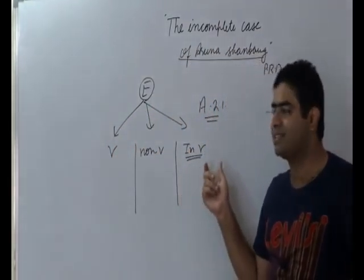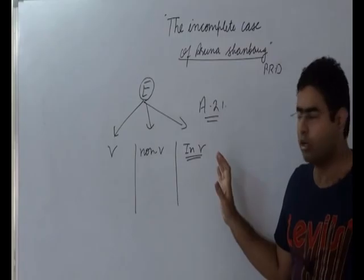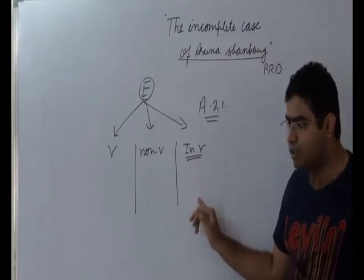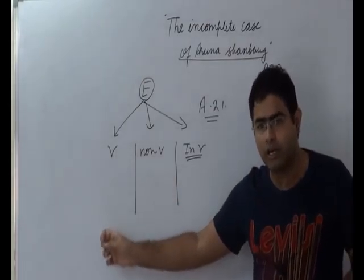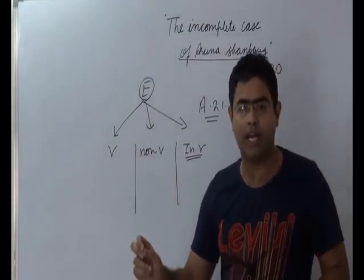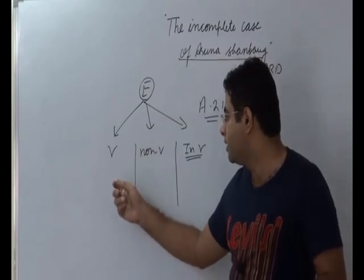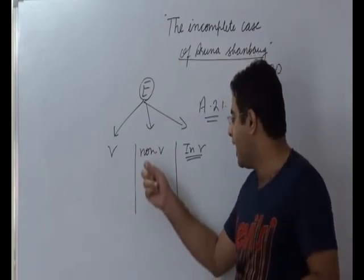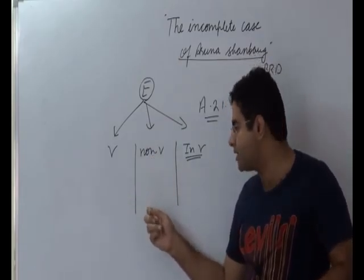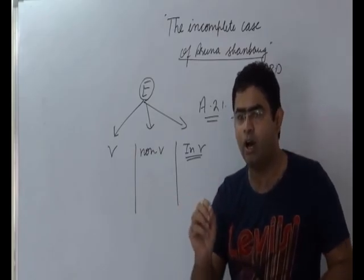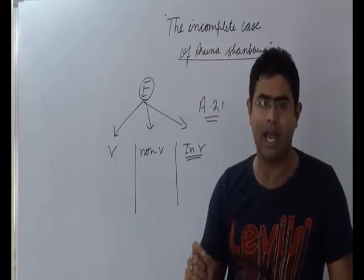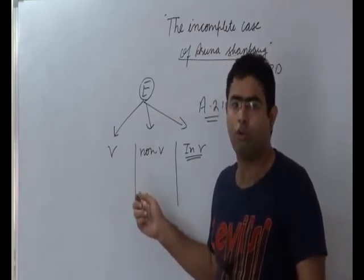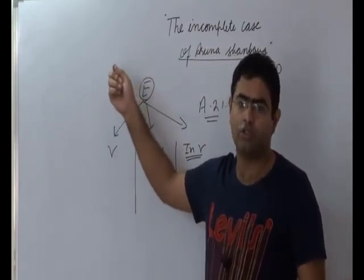This kind of euthanasia is known as involuntary euthanasia. This is actually incompatible with Article 21 of the constitution. Voluntary euthanasia you can compare with Section 309 of IPC, that is committing suicide. As far as active and passive euthanasia is concerned, in India only passive euthanasia is legalized, and this is also pending with the constitutional bench of the Supreme Court.